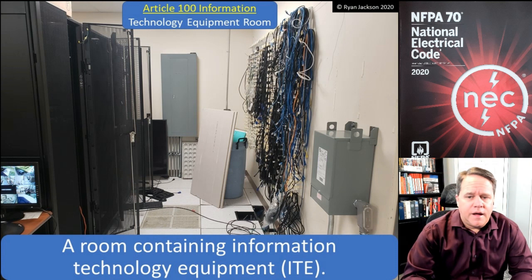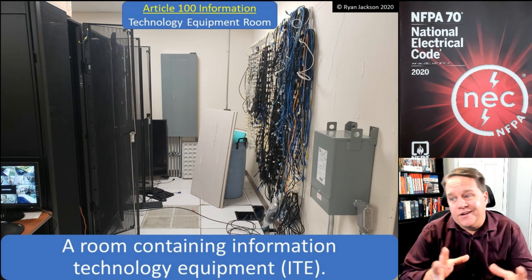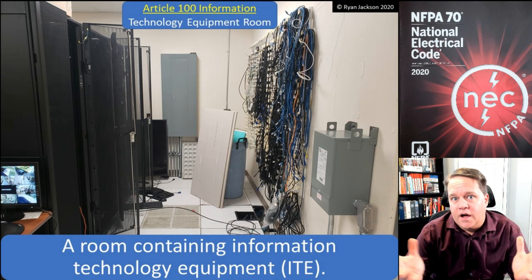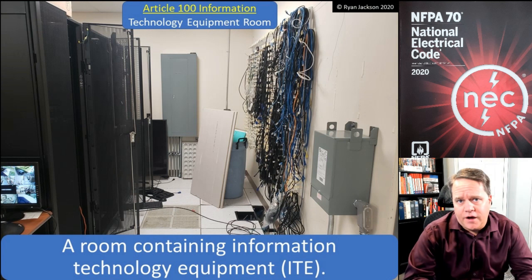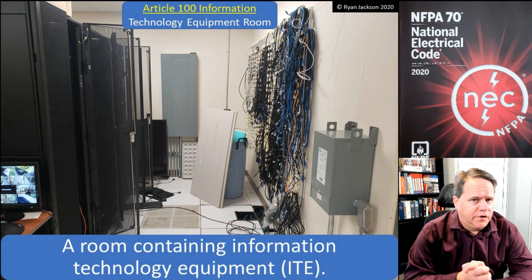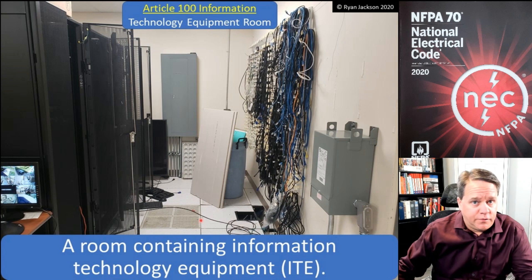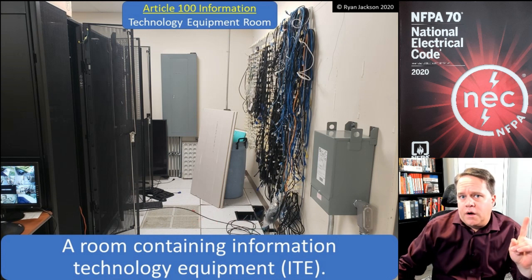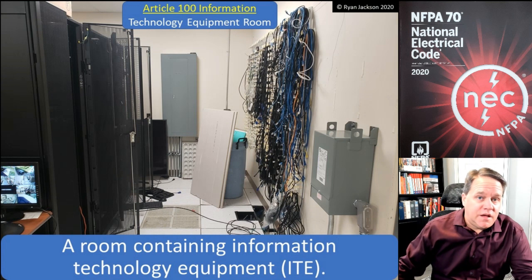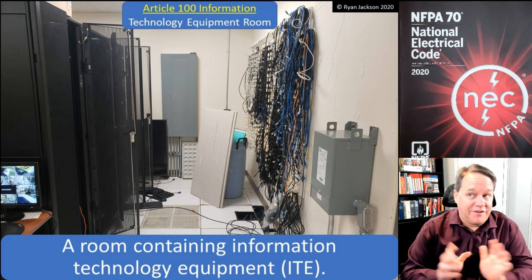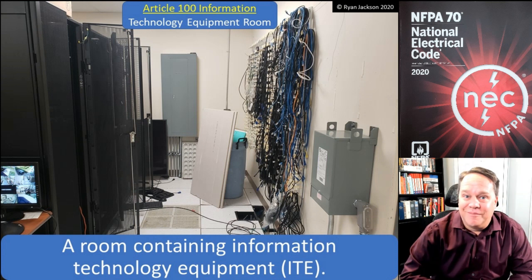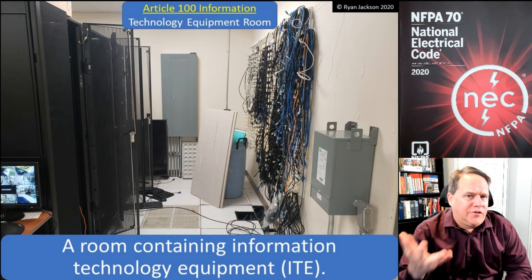We're also going to be running cables through that raised floor. Forty years ago when we first started doing computer networking as we'd recognize it today, we didn't have very good cabling systems. Then requirements for plenum ratings were added for cables used inside areas used for air handling. Under 300.22, cables in an area used for environmental air have to be plenum rated, but back then you couldn't get a good plenum rated cable — maybe Cat 3 or whatever it was — that could handle the needs of an IT room.